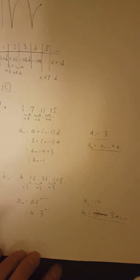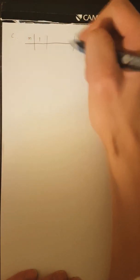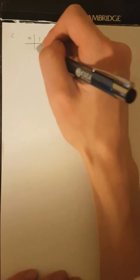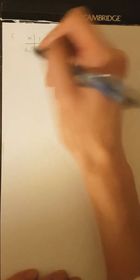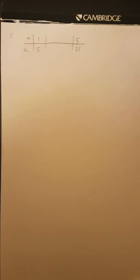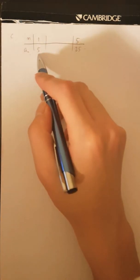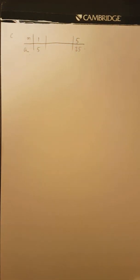That was question 1B. Let's go to question C — an arithmetic sequence with the following values. So in this question, it tells you that it's an arithmetic sequence. Starting from N equals one, two, three, four, five — the first value is going to be five and the value at N equals five is going to be 25.